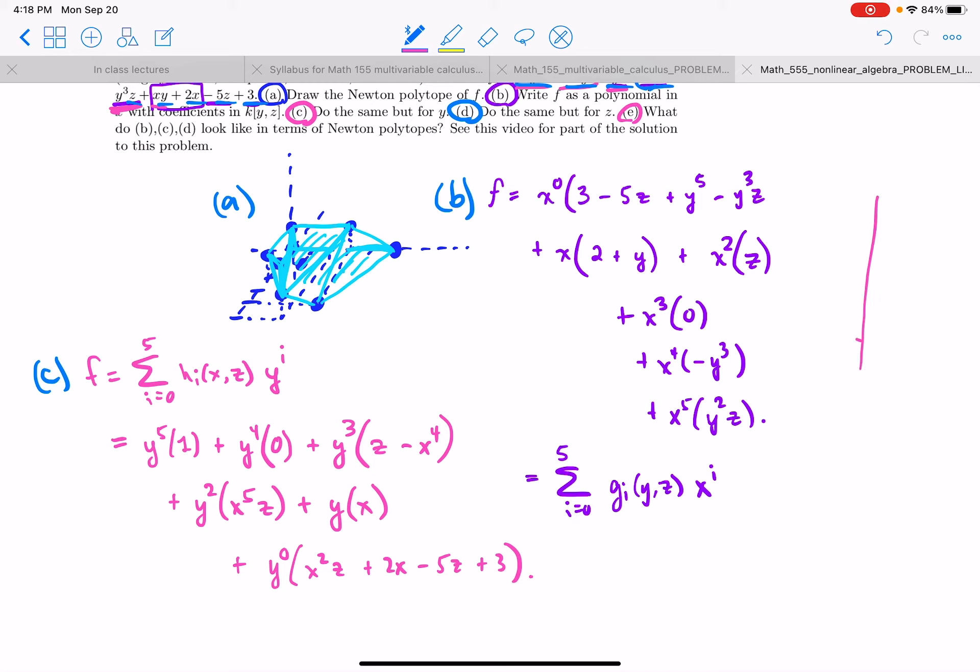The Newton polytope here would be, let's see, we have an x to the zero term. We have an x to the five term. And we have other terms too. We have every term except x to the third. x to the third had a zero coefficient. So zero, one, two, three is skipped, and then four, five. Okay. So the Newton polytope is then still the line segment. Even though we skipped three, the Newton polytope is the convex hull, which gives the entire line segment between zero and five.